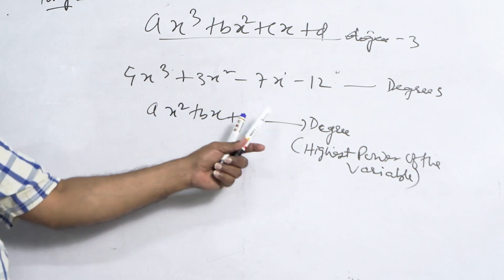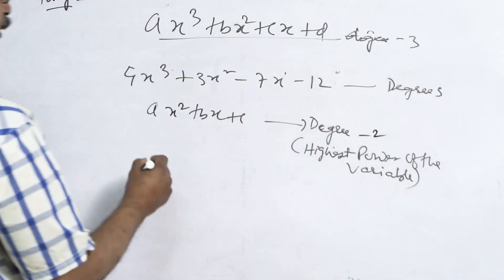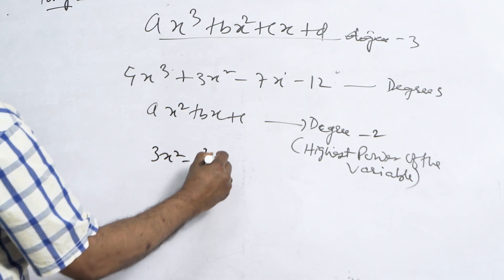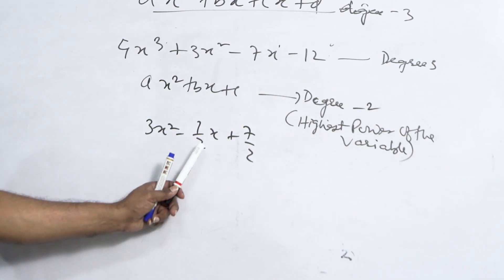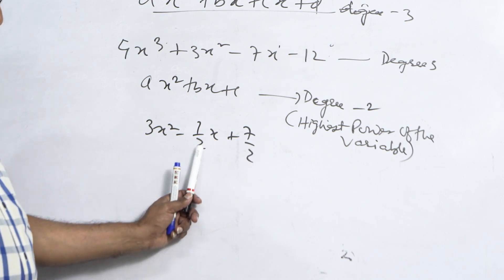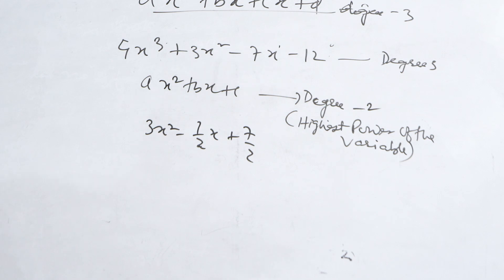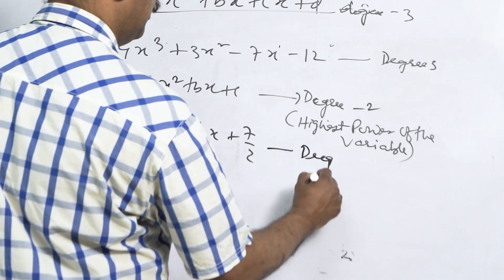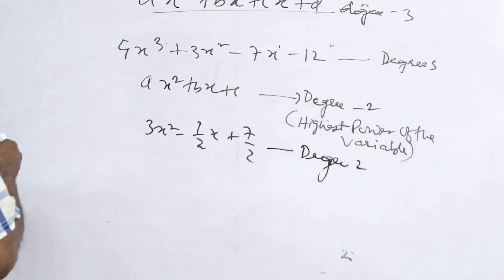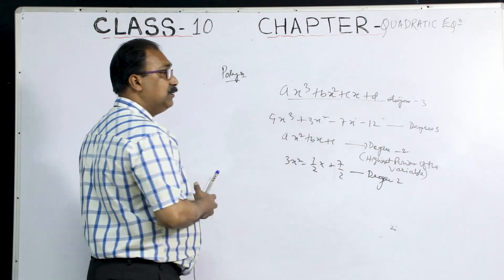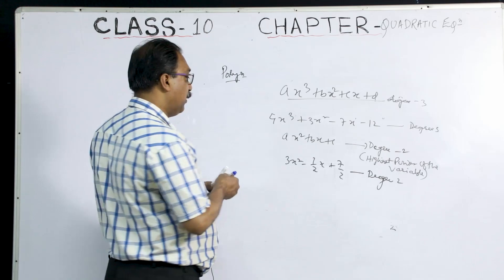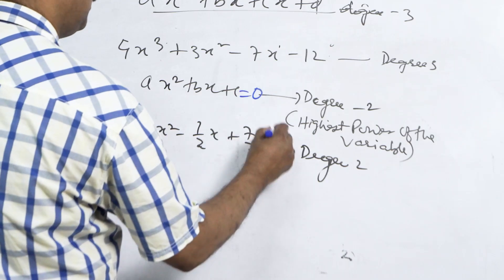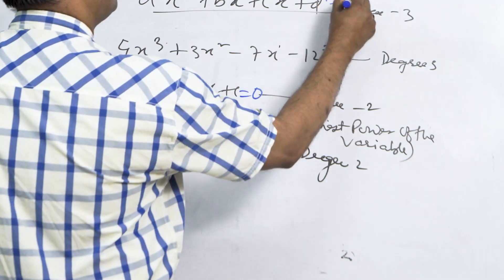If the variable power is degree 2, then say 3x² − (1/2)x + 7/2 — it does not matter whether the coefficients are rational or not. They are the coefficients, and the term without x is called the constant term. The highest power of the variable is degree 2. When you set a polynomial equal to something, that is called an equation.